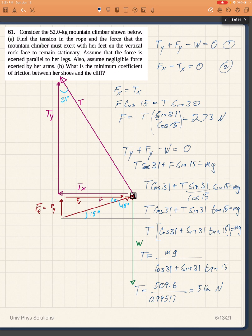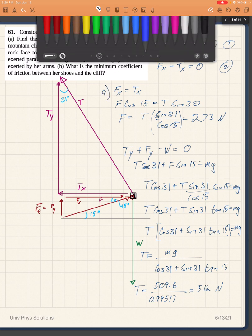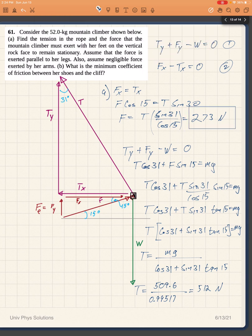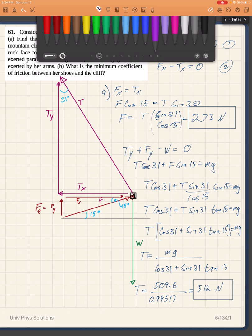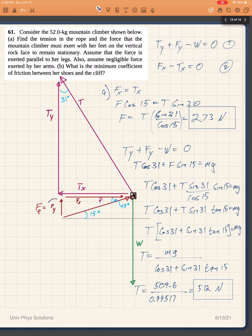For part b we are asked to find what is the minimum coefficient of friction between the shoes of the climber and the cliff. Now as I said before, the force of friction is what provides this Fy. If there was no friction her shoes would slip, so she would not be able to create this component of force along the face of the rock.